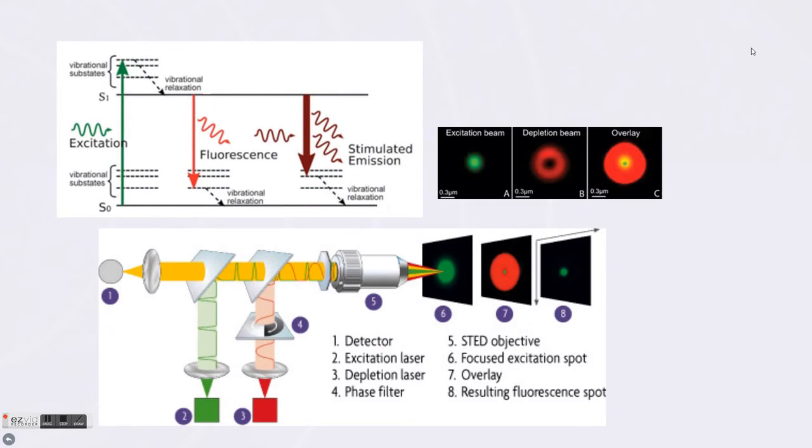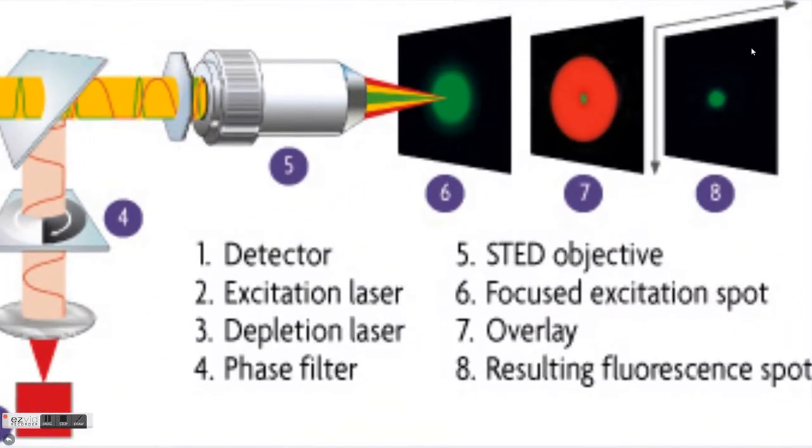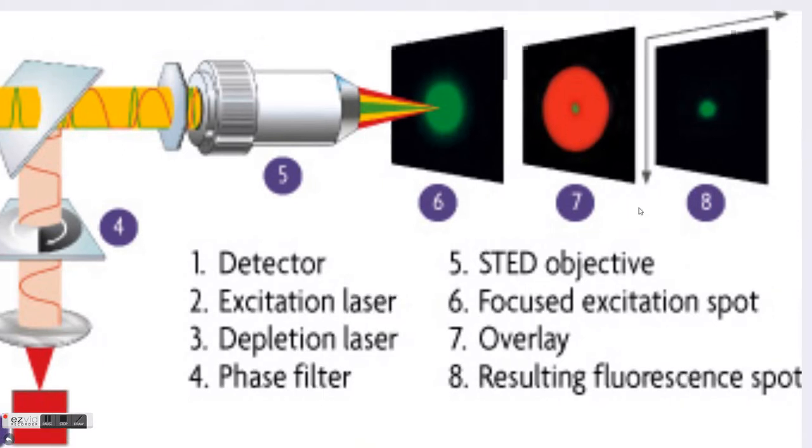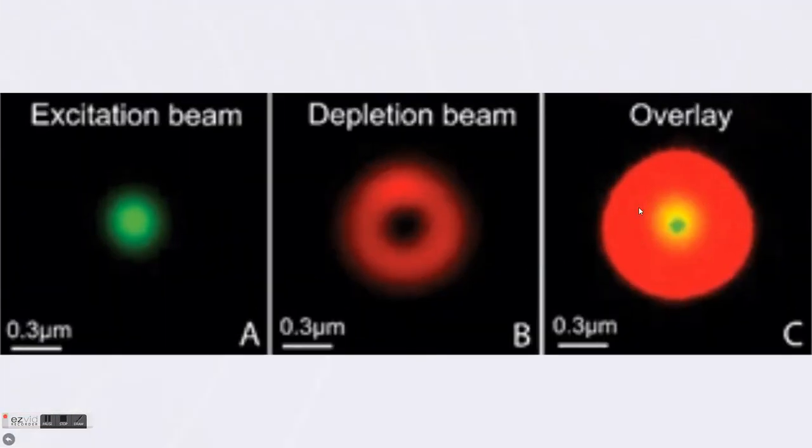Now how is this different in STED microscopy? In STED microscopy, there is another layer of light, shown in red, or panel number 7. This extra layer of light is from the depletion laser, which passes through a spiral phase plate, forming an optical vortex, where light emitted looks like a donut shape.